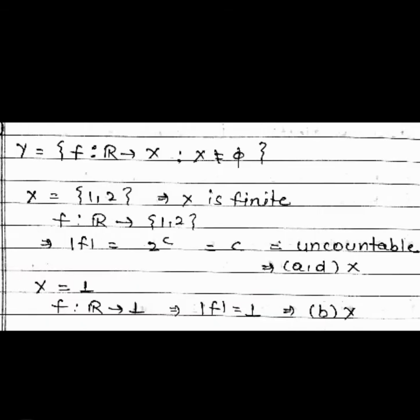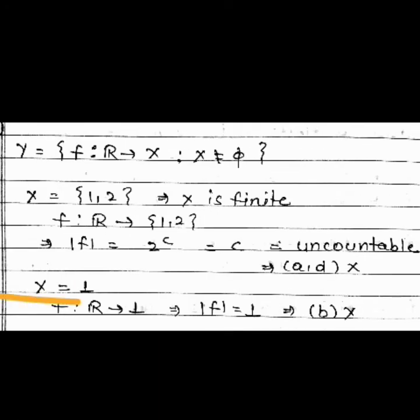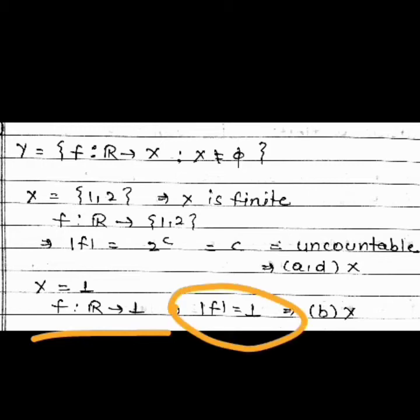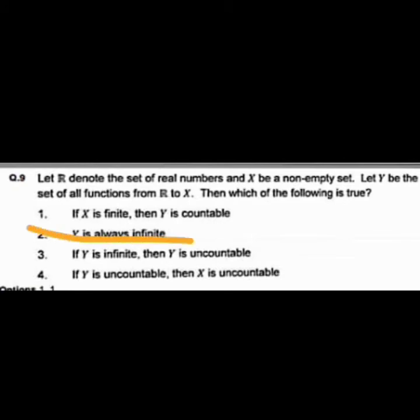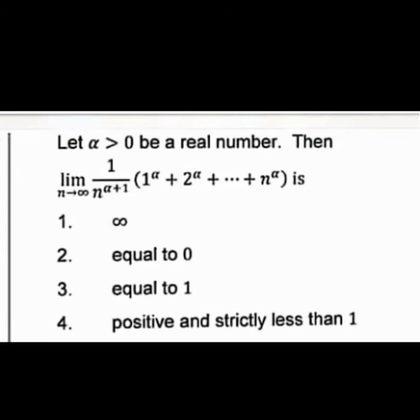For option B — Y is always infinite: consider X = {c}, a single-element set. Then the only function from R to X is the constant function mapping everything to c, so Y has cardinality 1, which is finite. Therefore option B is discarded. This leaves option C: if Y is infinite, then Y is uncountable — which is correct. So option C is the answer.